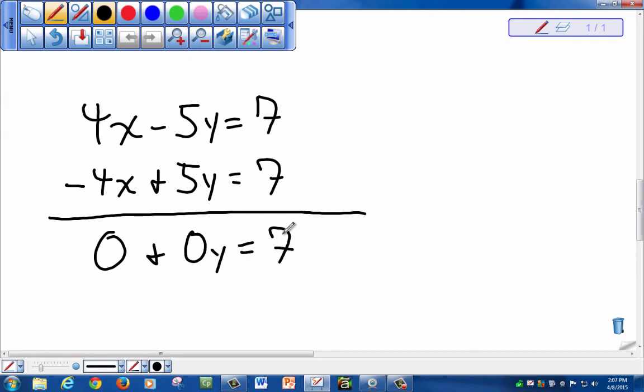Now, when you stop and look at this, you'll realize that 0 can't equal to 7, making this an untrue statement. If this is an untrue statement, then you obviously know there is no solution for this problem.